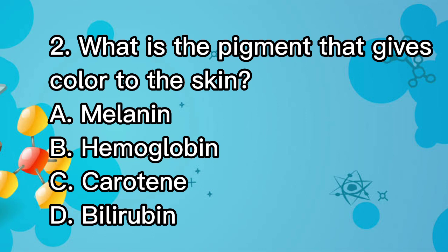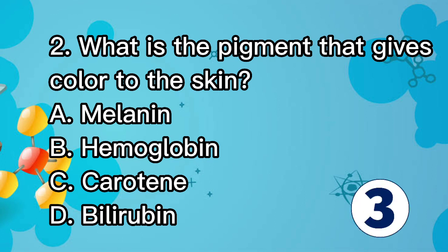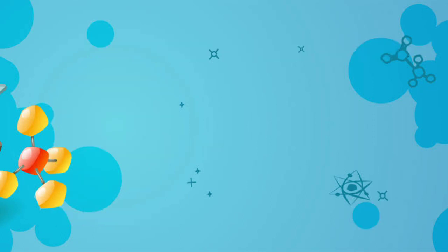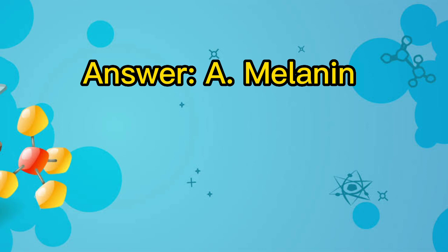Question 2. What is the pigment that gives colour to the skin? A. Melanin. B. Hemoglobin. C. Carotene. D. Bilirubin. Answer: A. Melanin.